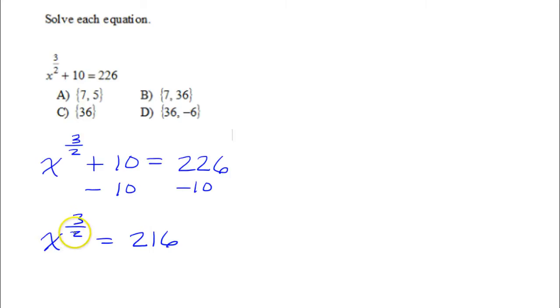Now, if I want to get rid of this 3 over 2 power, the next thing to do is to raise both sides of the equation to the reciprocal power. So 3 over 2, the reciprocal is 2 over 3.